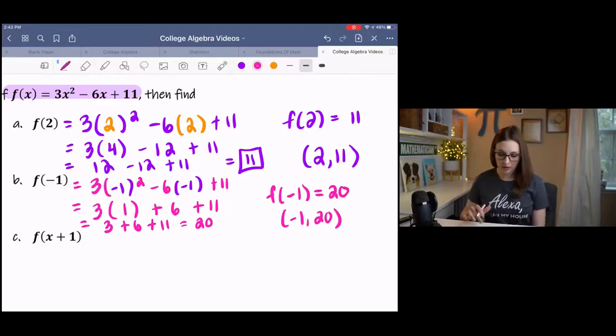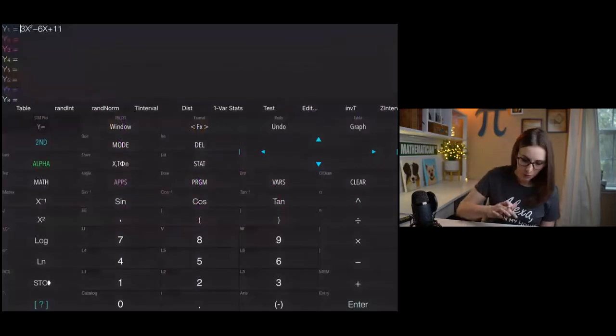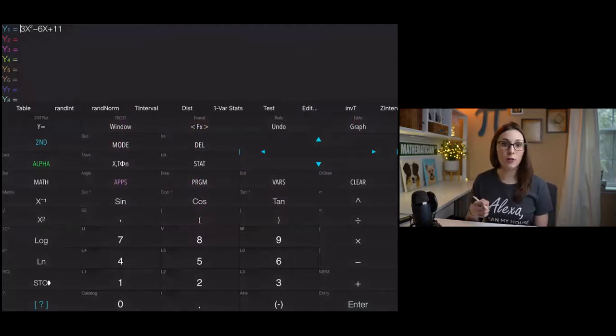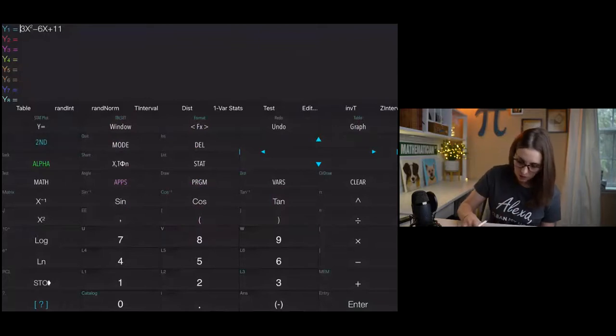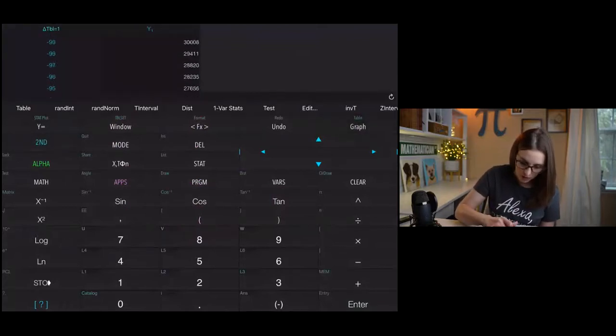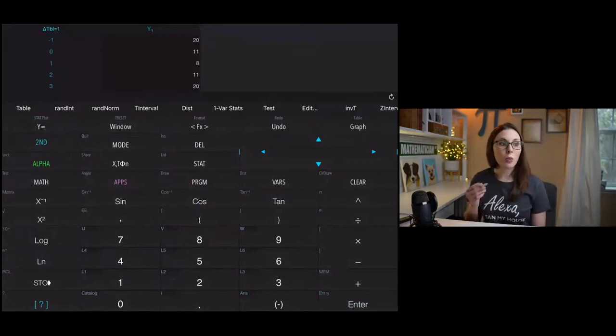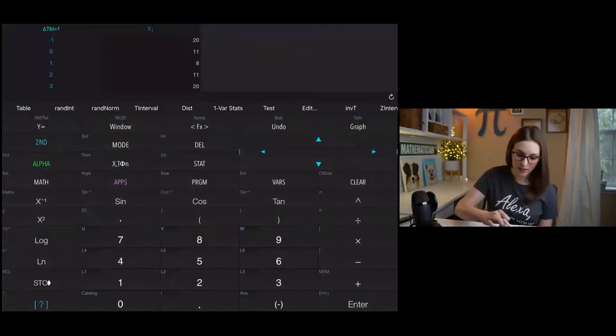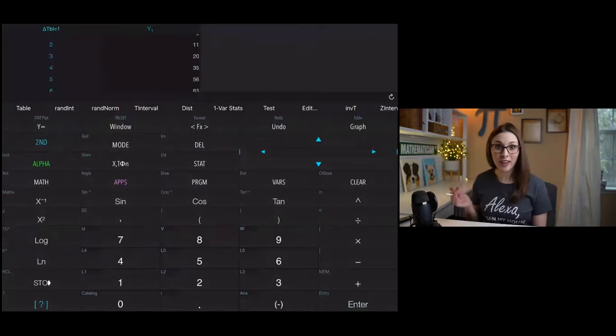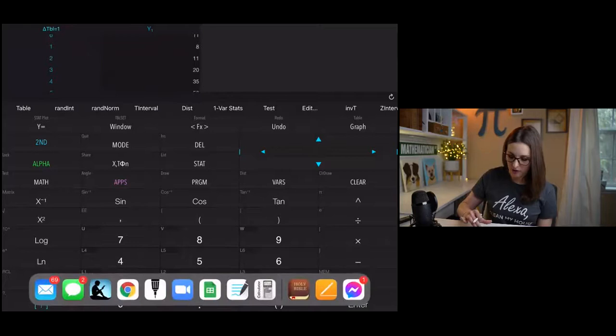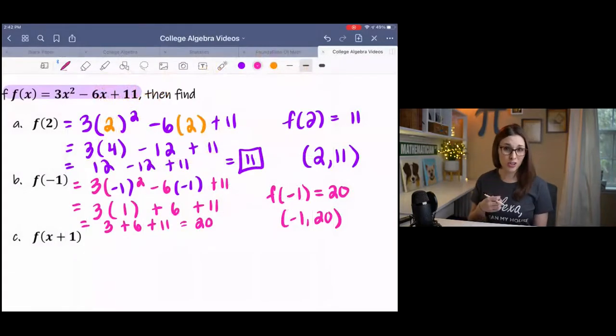Now let me show you something in the calculator. If I go to y equals and I type in my function 3x squared minus 6x plus 11, and then I go to my table, I don't know why it's way up there. And I go to negative 1. When x is negative 1, what is y? 20. When x is 2, what is y? 11. So you can see that instead of doing this algebraically like we did, you can actually use a table of values.